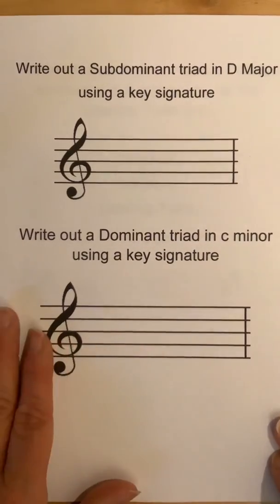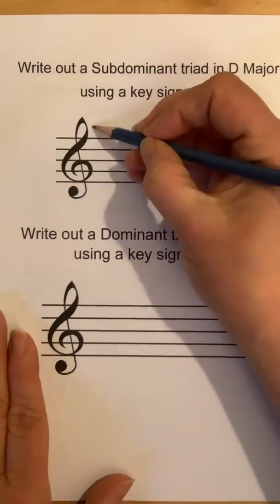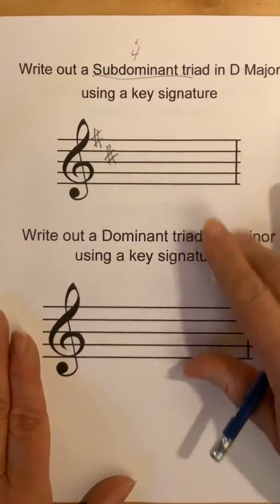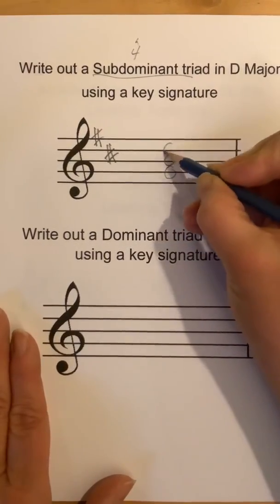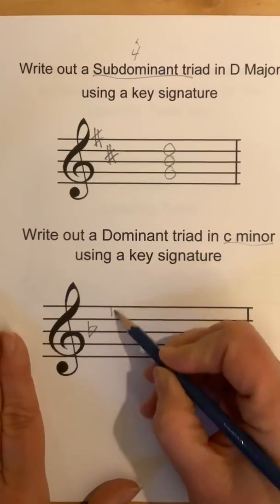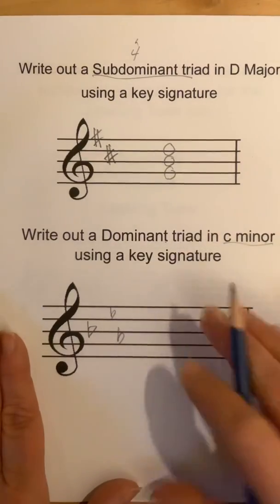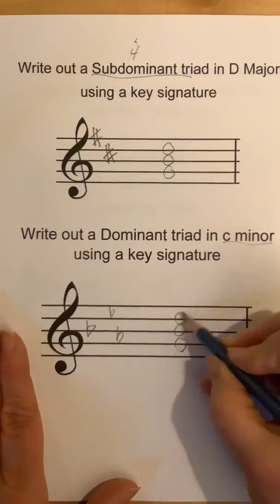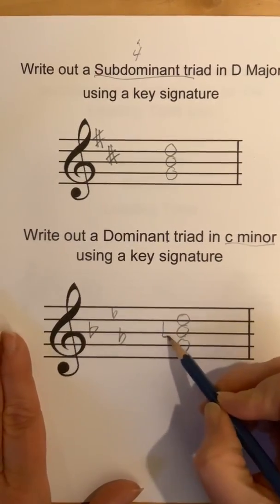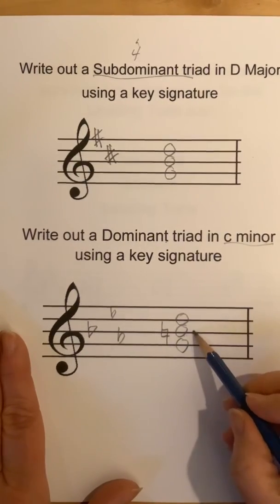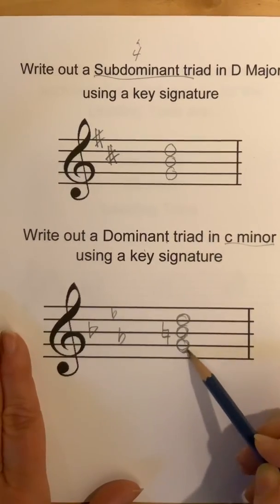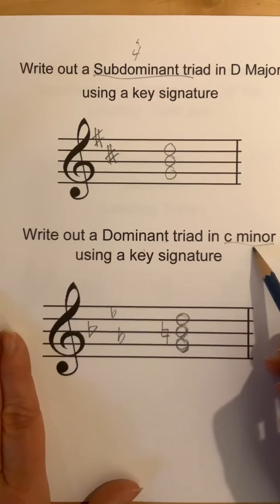Writing out a subdominant triad in D major using a key signature: D major has two sharps. The subdominant is the fourth scale degree — D, E, F, G — so you'll write a triad starting on G. Writing out a dominant triad in C minor: C minor has B flat, E flat, A flat — its relative is E flat major. The dominant of C is G. You can see it's the same triad as before but different, because in the dominant triad of a minor key, the B ends up being natural as the leading tone. Anytime you have a minor key with a dominant triad, you raise the third of the triad. Even if it's in inversion, you still raise that B because it's the leading tone of C minor.